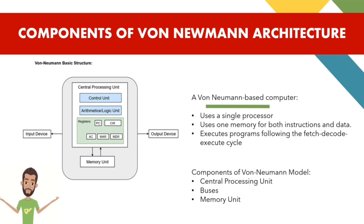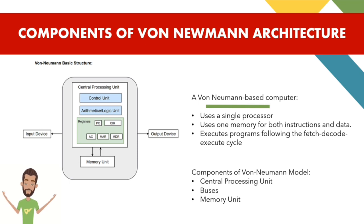The basic physical organization of a modern computer based on the Von Neumann architecture model comprises five units: memory, control, arithmetic and logic, input, and output. The central processing unit comprises the control and arithmetic and logic units. The Von Neumann architecture consists of a single shared memory for programs and data, a single bus for memory access, an arithmetic unit, and a program control unit.